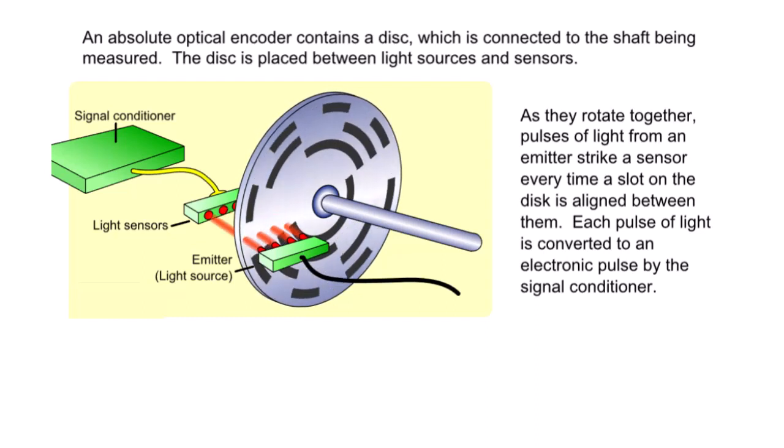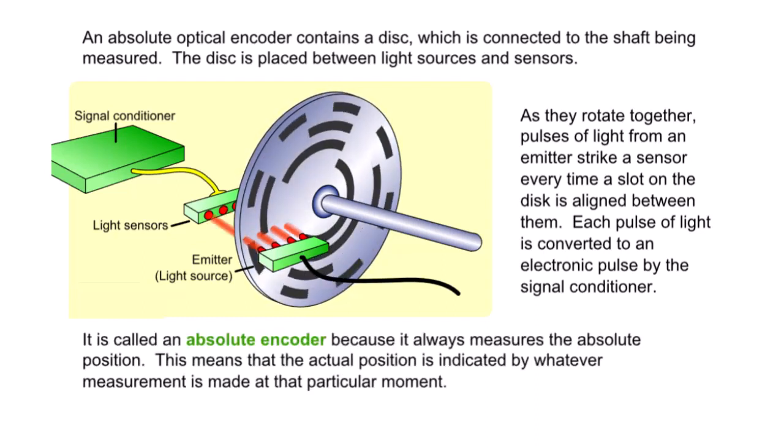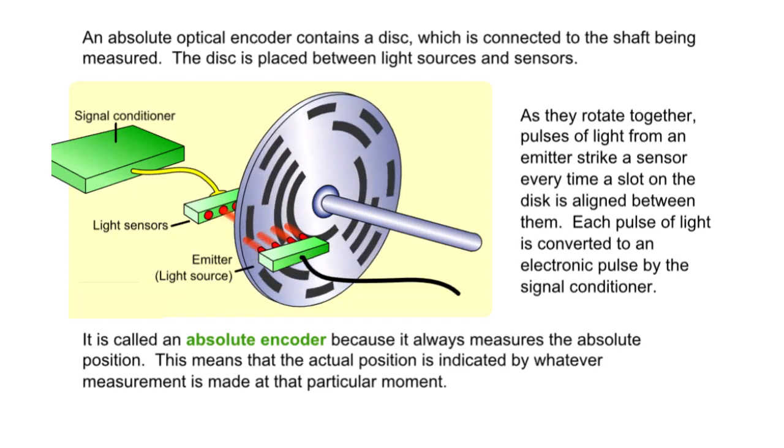Each pulse of light is converted to an electronic pulse by the signal conditioner. It is called an absolute encoder because it always measures the absolute position. This means that the actual position is indicated by whatever measurement is made at that particular moment.